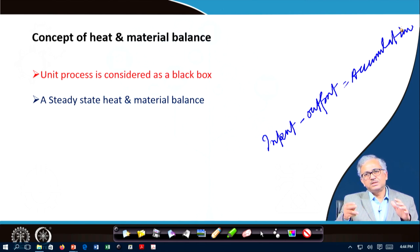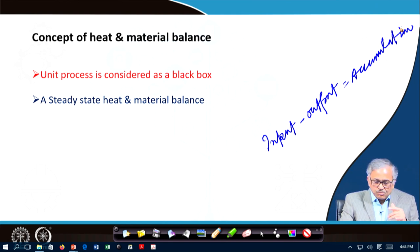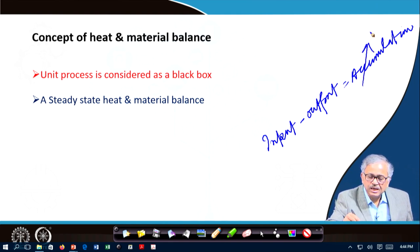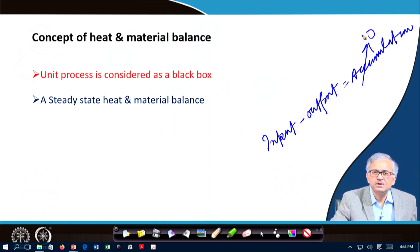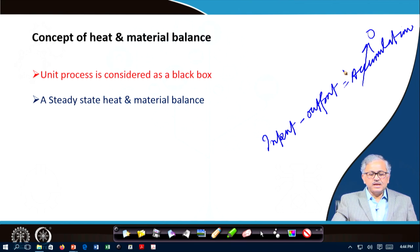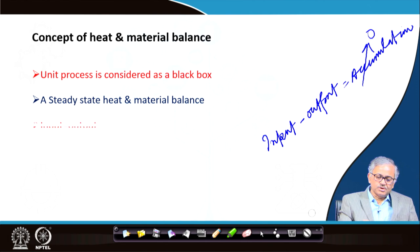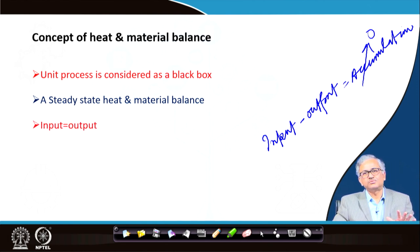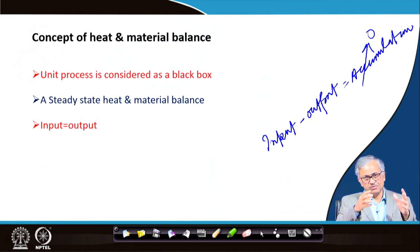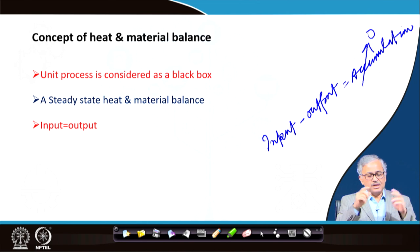Input minus output equals accumulation - that is a transient state. When accumulation becomes zero, input becomes equal to output - that is under steady state. So we basically deal with that state only, where input is equal to output, and that is the macroscopic heat and material balance we are going to discuss here.